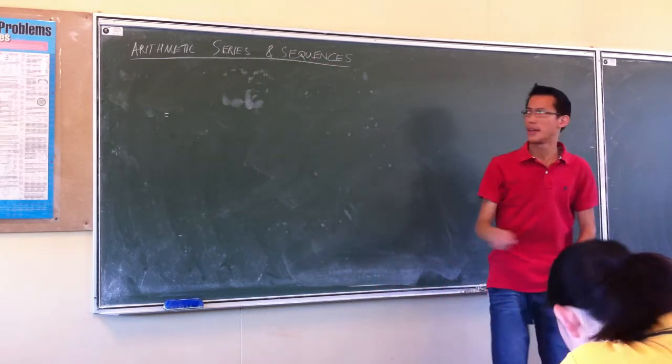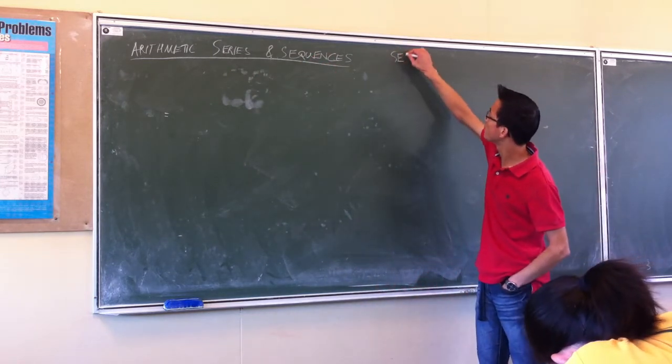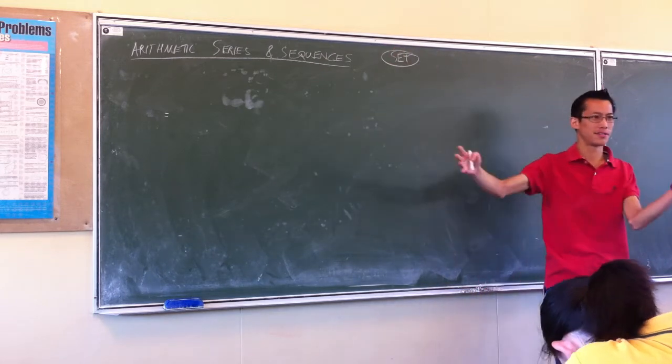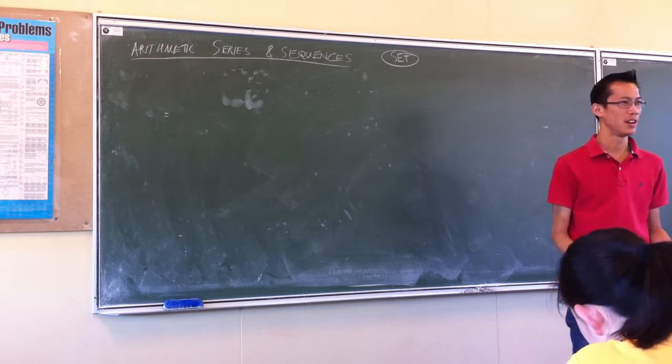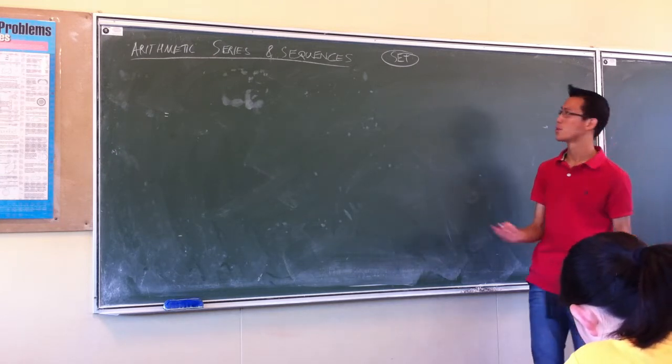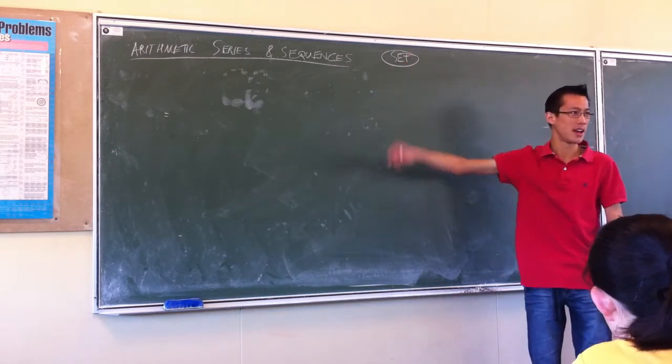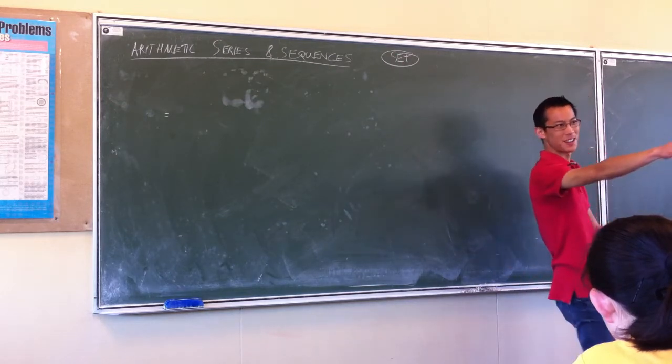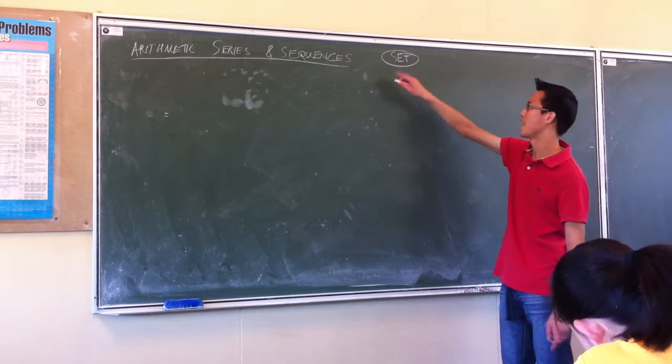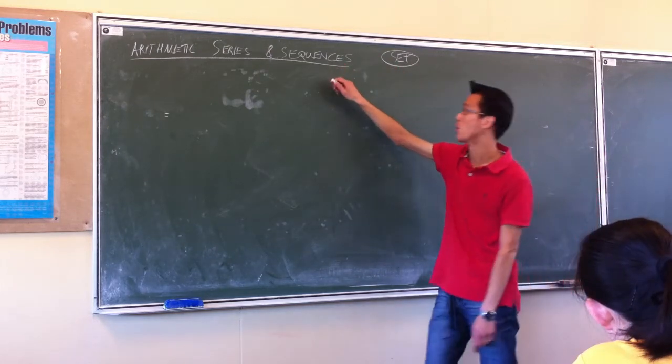A sequence is a bit like a set. It's a bunch of numbers, but what does it have in addition to a set? What's more specific about a sequence that a set doesn't have? Do you remember? A set doesn't have order, a sequence has order.